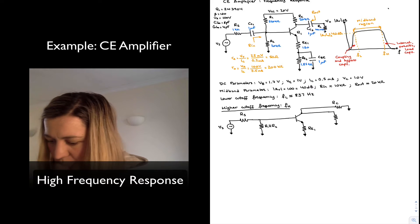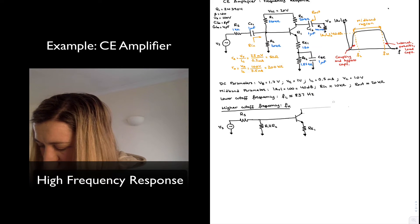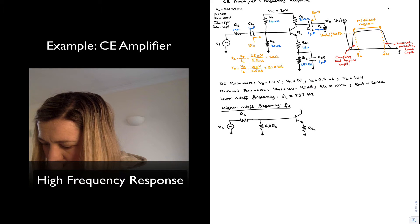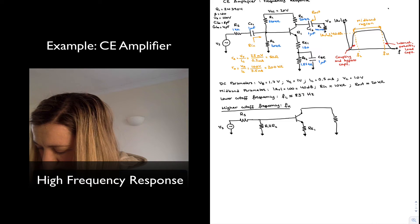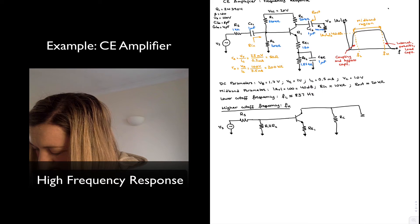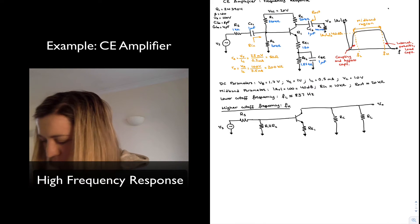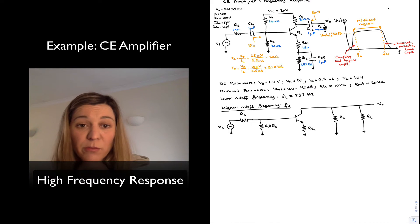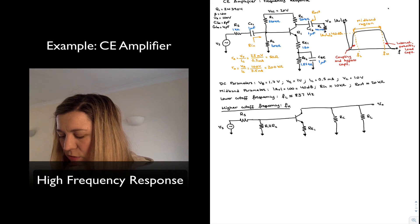I may as well just connect both of those in parallel. So I'll have my RC going to ground as well as my load resistor going to ground, and then here will be my output, V-out. I have replaced all my bypass and coupling capacitors with short circuits because now we are considering the high frequency region.